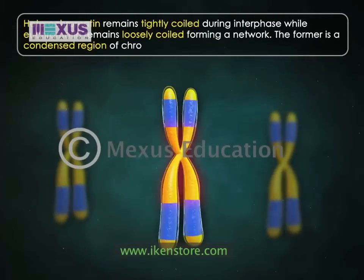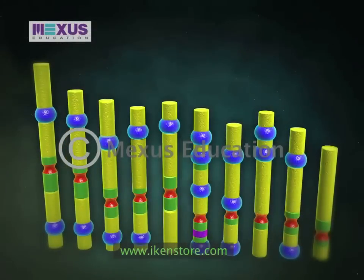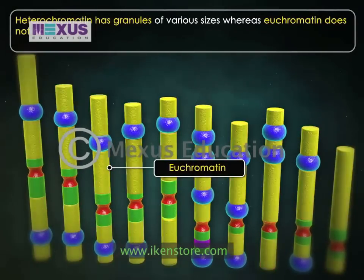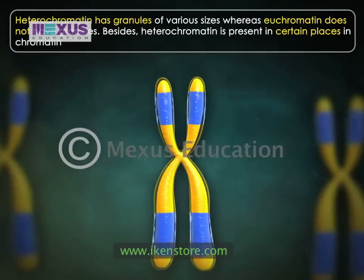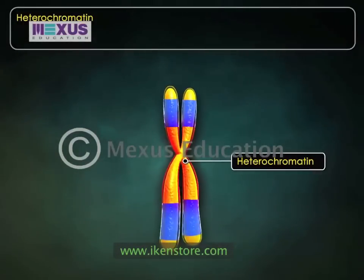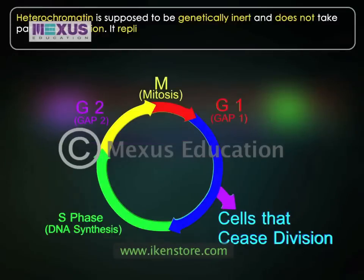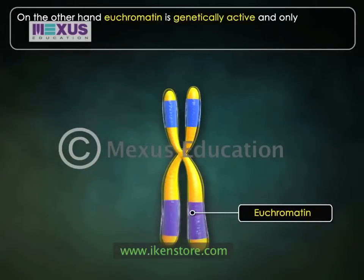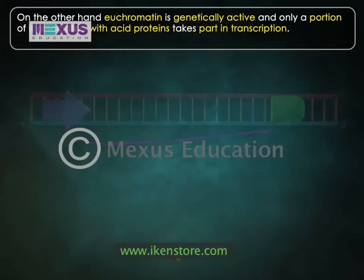Heterochromatin is a condensed region of chromatin, whereas euchromatin is a diffused region. Heterochromatin has granules of various sizes, whereas euchromatin does not have granules. Heterochromatin is present in certain places in chromatin, while euchromatin forms the bulk of the chromatin. Heterochromatin is supposed to be genetically inert and does not take part in transcription; it replicates late in the S phase. On the other hand, euchromatin is genetically active and only a portion of it associated with acidic proteins takes part in transcription. It replicates early.